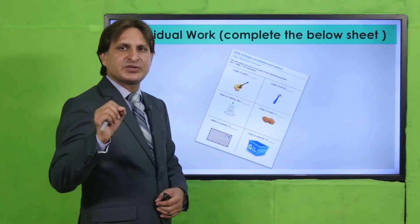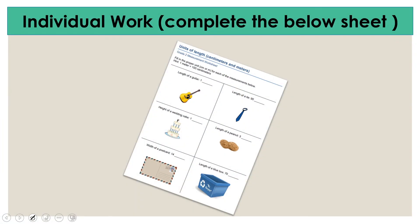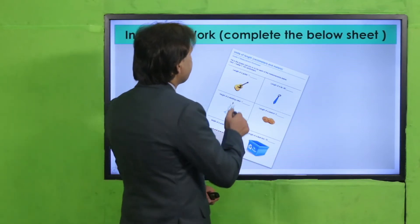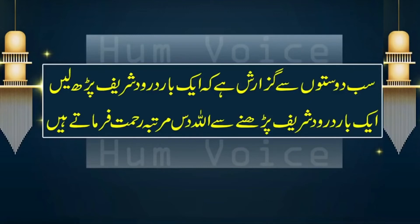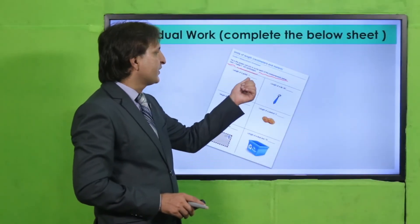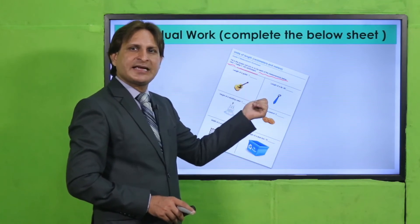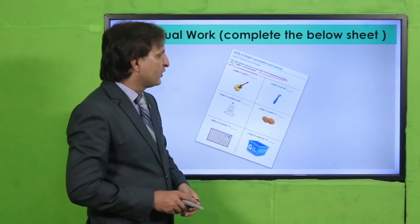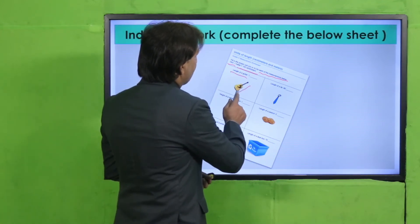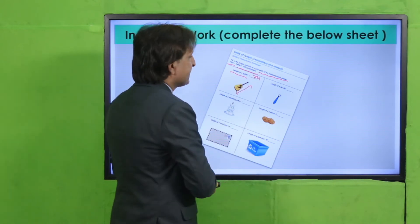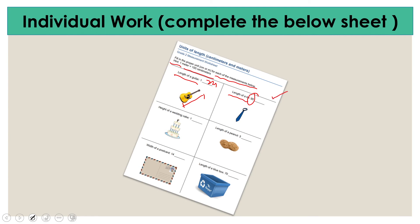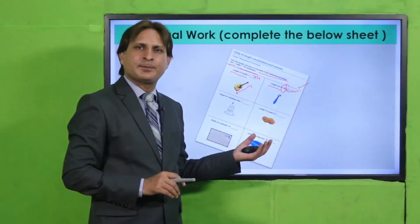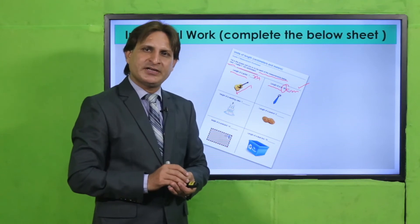Students, ab aajayen task sheet ki taraf. Har student ne yeh task sheet complete karne ke baad apne teacher ko submit karvani hai. Aapne inko observe karna hai aur batana hai ki inko centimeter mein ya meter mein measure kar sakte hain. Jaisa ke yeh guitar hai — yeh one meter long hota hai, toh yahan meter use karenge. Similarly, length of a tie is 90 cm, toh 90 ke saath centimeter aayega. Baaki parts complete karne ke baad worksheet apne teacher ko submit karva deni hai.